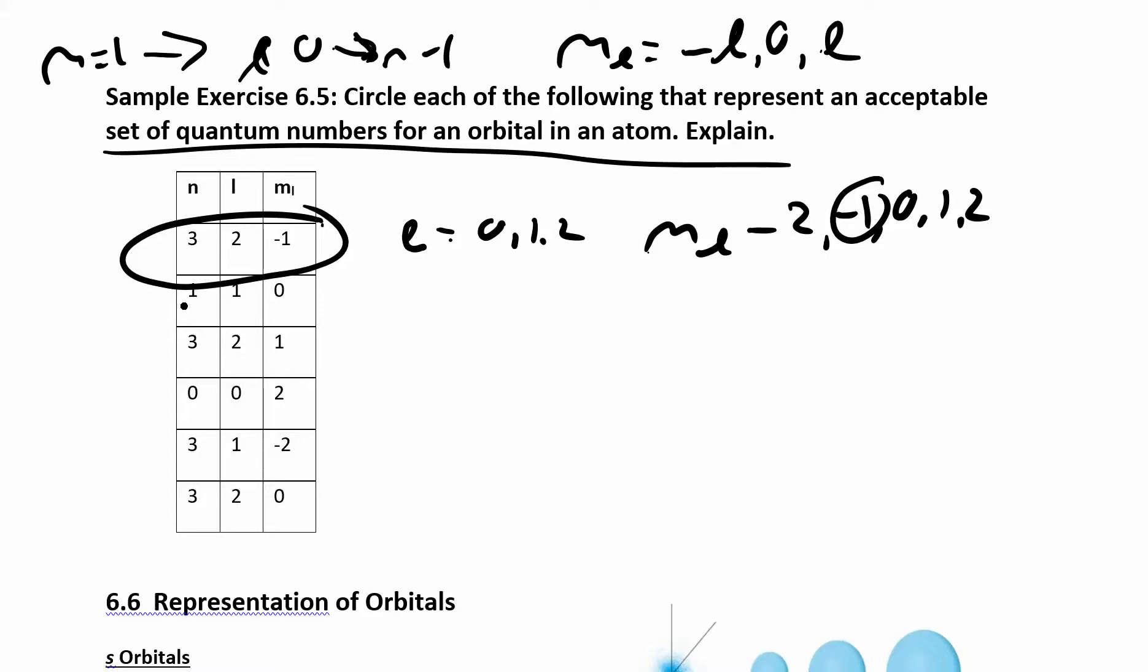Now let's look at the next one. n is 1. If n is 1, l can be 0. So this one doesn't work because l can only be 0. Does that kind of make sense? If n is 3, what could l be? l could be, just like we did in the first one, l could be 0, 1, or 2 because it has to range all the way up to n minus 1. So this is fine. And if l is 2, ml can be negative 2, negative 1, 0, 1, or 2. So it's 1 in this case. So this is also fine. Very similar to that first one.